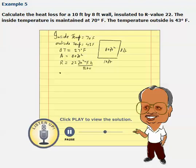Now, heat loss in BTUs per hour is equal to area times delta T divided by R value. And in this case,